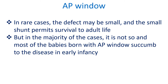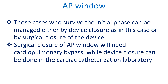In rare cases, the defect may be small, and this small shunt permits survival to adult life. But in the majority of cases, it is not so, and most babies born with AP window succumb to the disease in early infancy. Those cases who survive the initial phase can be managed either by device closure, as in this case, or by surgical closure of the defect.